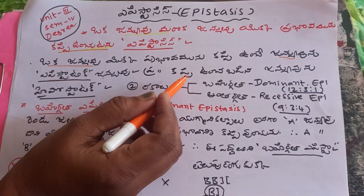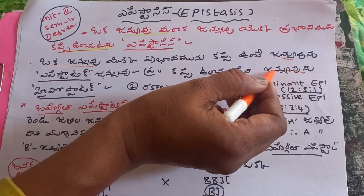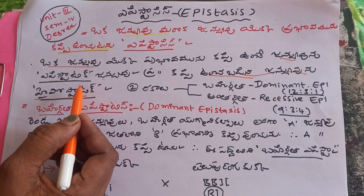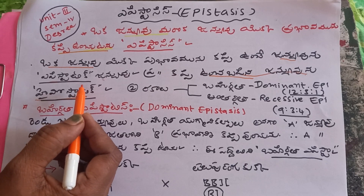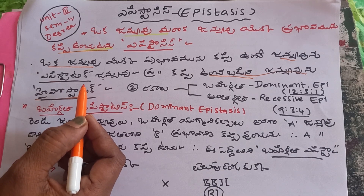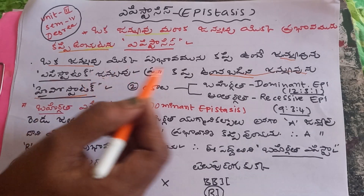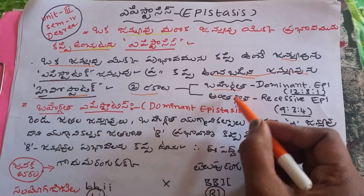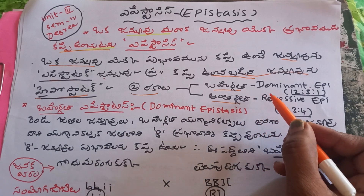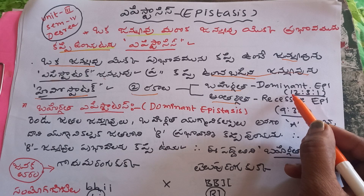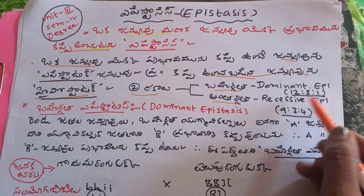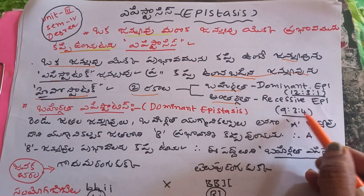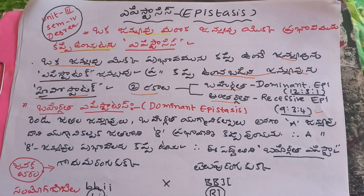Epistasis is very important. The gene that suppresses another gene is called the epistatic gene, and the gene that is suppressed is called the hypostatic gene. Epistasis gives a 9:3:4 ratio.